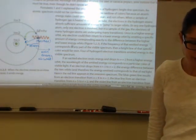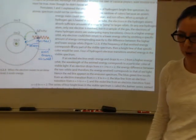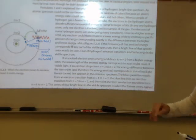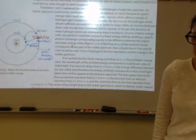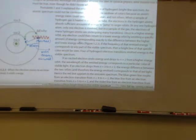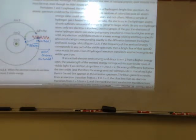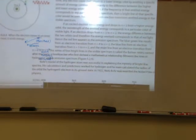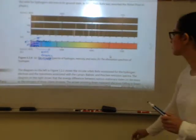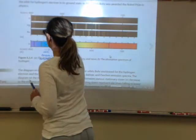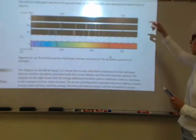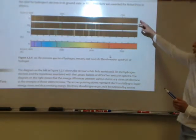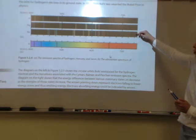If an excited electron emits energy and drops from a higher energy orbit, the wavelength of the emitted energy corresponds to a color of visible light. The emission spectrum for hydrogen is shown here, along with mercury and neon — notice that they are all different and unique, like a fingerprint.